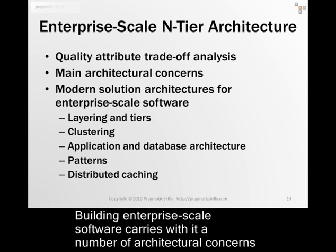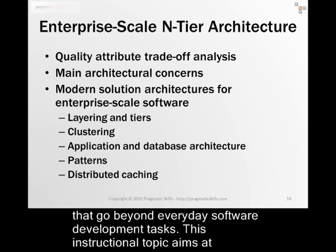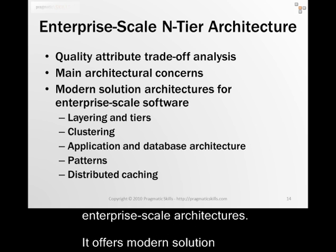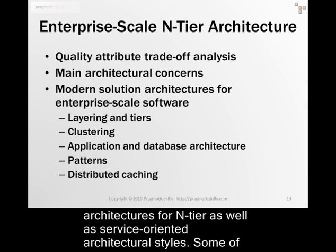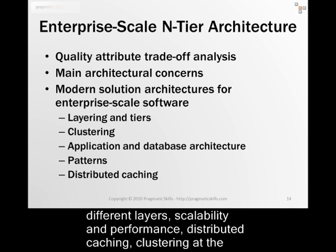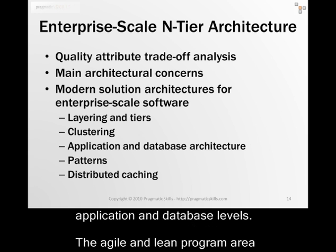Building enterprise-scale software carries with it a number of architectural concerns that go beyond everyday software development tasks. This instructional topic aims at answering the most common questions around architecture concerns and quality attributes of enterprise-scale architectures. It offers modern solution architectures for end-tier as well as service-oriented architectural styles. Some of the more important topics covered include layering, physical tiers, patterns for different layers, scalability and performance, distributed caching, and clustering at the application and database levels.